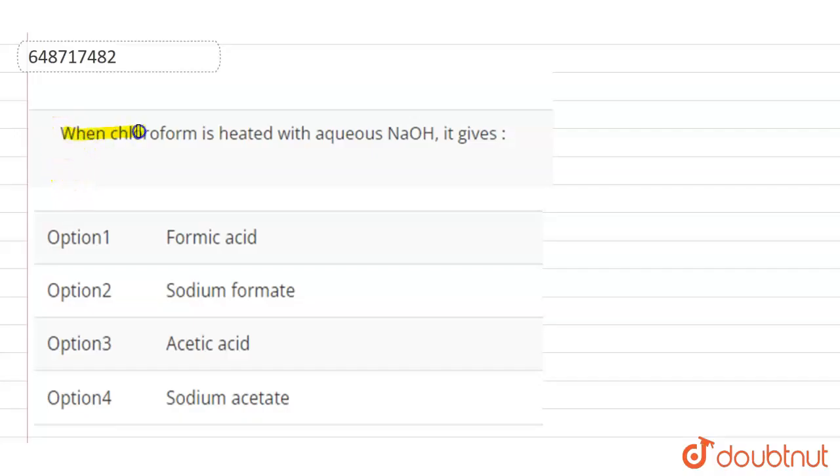When chloroform is heated with aqueous NaOH, that is sodium hydroxide, it gives: Option 1 - Formic acid, Option 2 - Sodium formate, Option 3 - Acetic acid, and Option 4 - Sodium acetate. Let's find out the answer for this question.